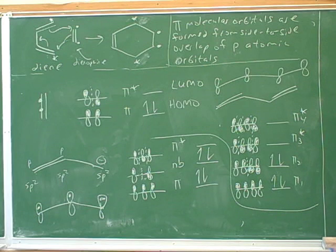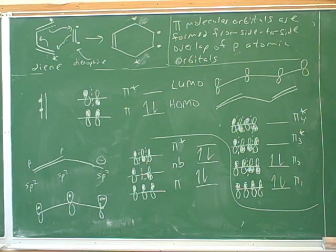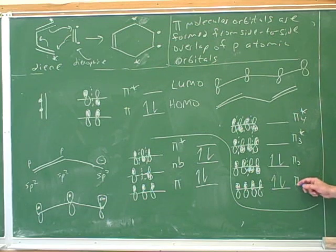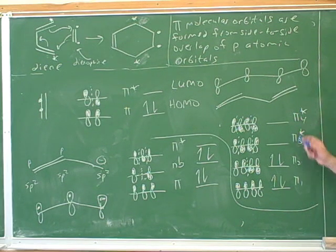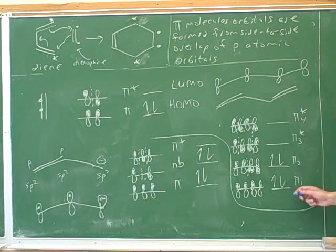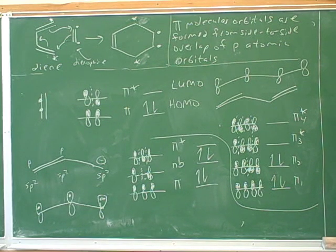A conventional way to deal with this would be to label them pi 1, pi 2, pi 3, and pi 4. The ones that are below the center line are the bonding pi molecular orbitals, so they don't get an asterisk. And the ones that are above the center line are anti-bonding, so they do get an asterisk. Notice that since there's an even number of pi molecular orbitals, none of them is on the center line, so there are no non-bonding orbitals.